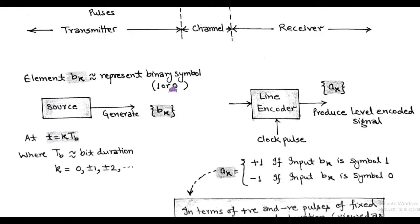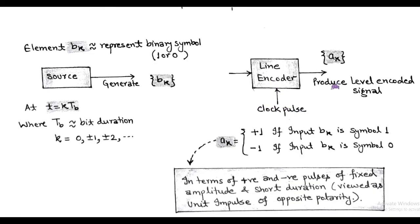This input binary data b_k is applied to the line encoder, that operates with the clock pulse, and produces a level encoded signal based on the line encoding — here for example, non-return to zero. The encoded output a_k has positive and negative amplitude levels.